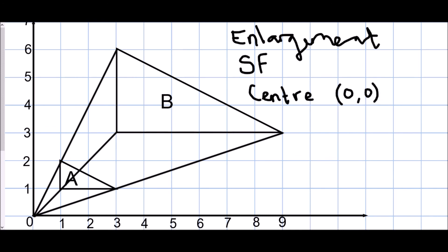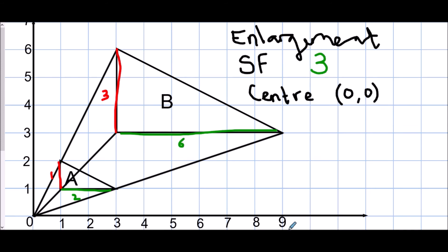To find the scale factor, we compare the lengths. A length of one compared to a length of three means the shape is three times bigger going from small to large. Checking with the bottom: it was two, it's become six — also a scale factor of three. So our scale factor is three.